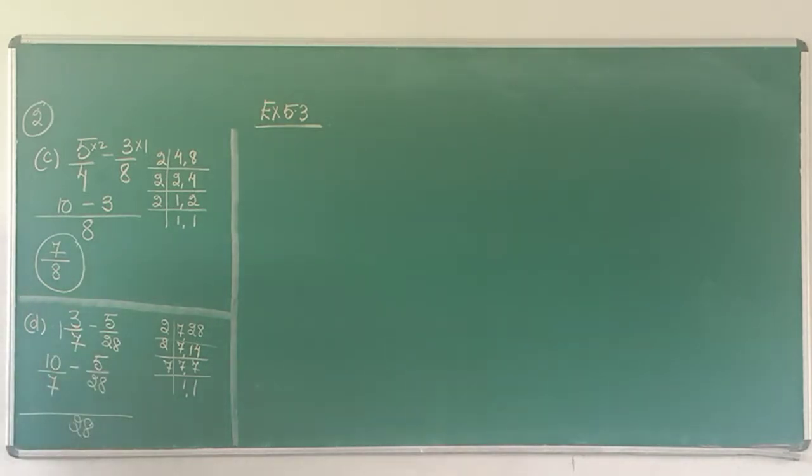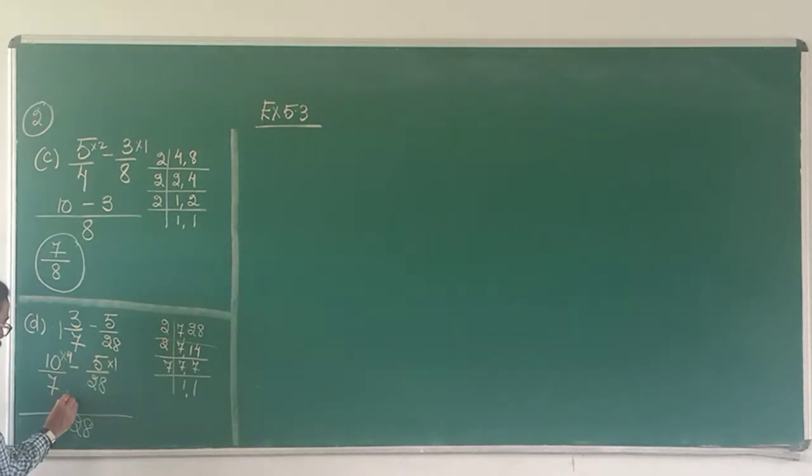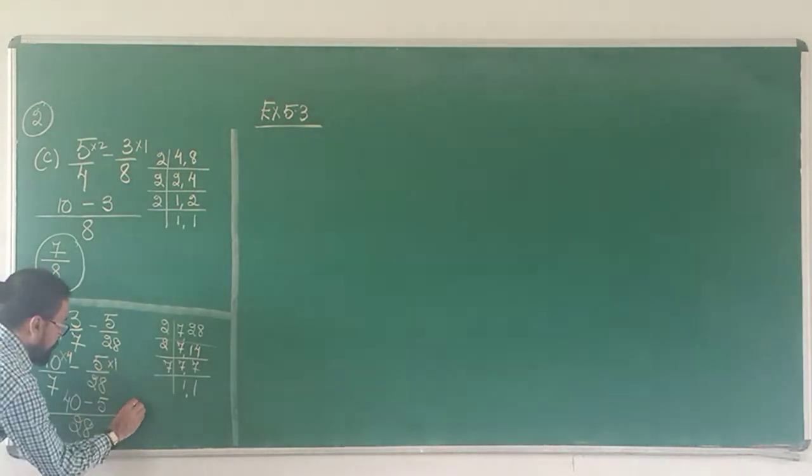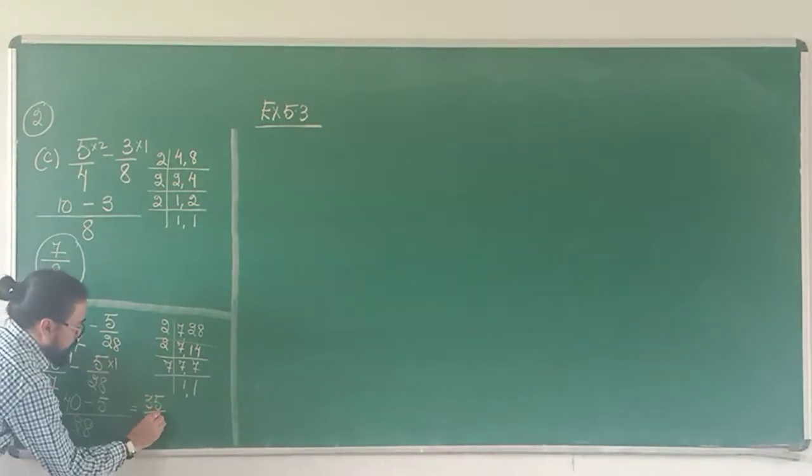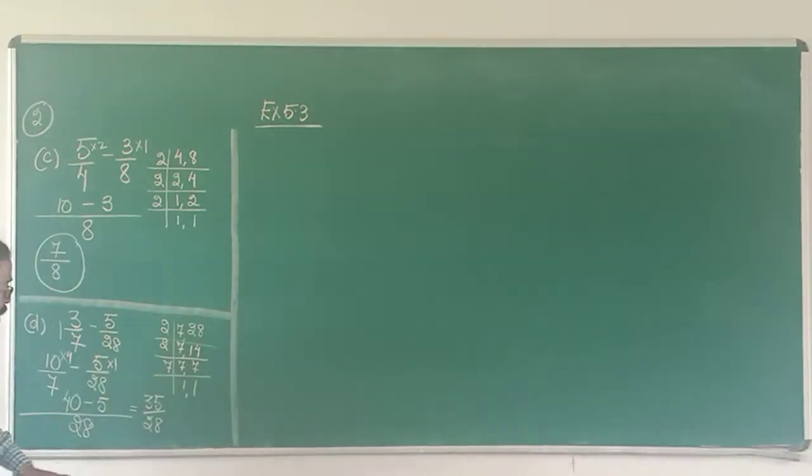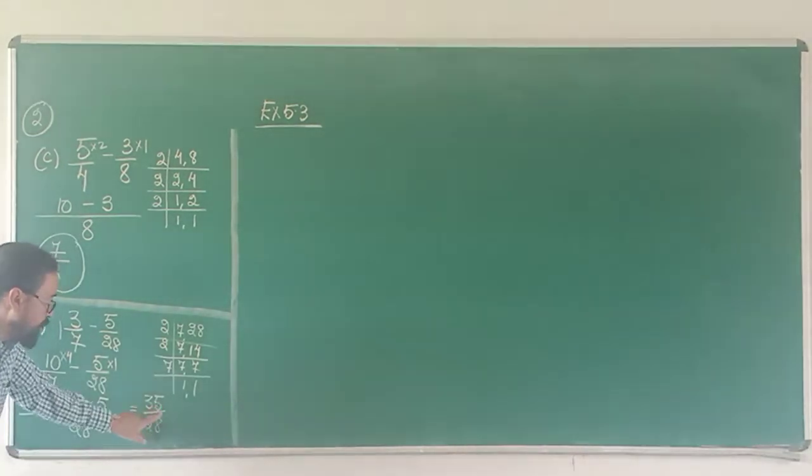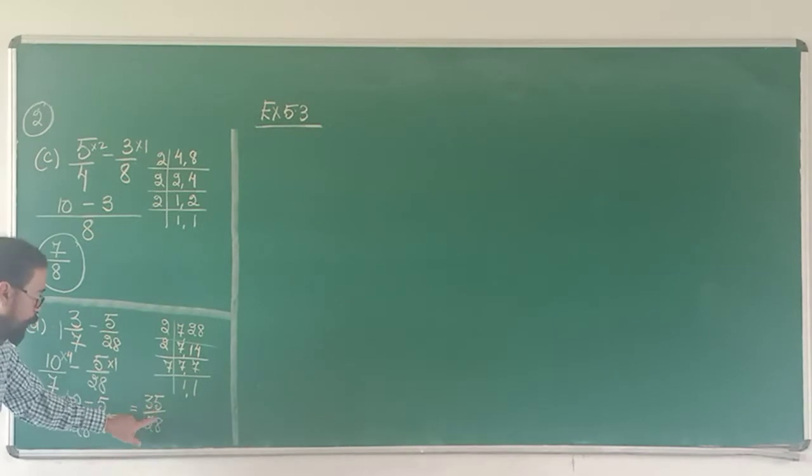7 goes into 28 four times, so this 10 has to be multiplied by 4. 28 goes into 28 only one time, so 5 will be multiplied by 1. 10 4's are 40 minus 5 1's are 5. 40 minus 5 gives me 35 upon 28. Now can it be reduced? 28 and 35, not by 2, not by 3. 5 by 7 is 35 but not 28.